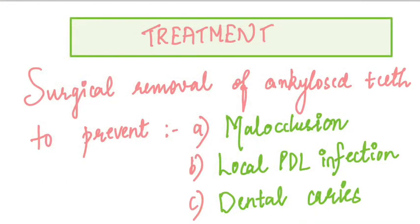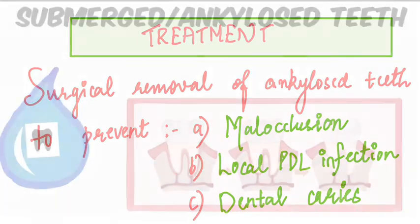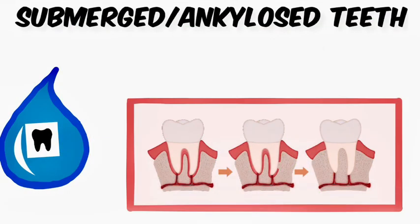Regarding treatment planning, these teeth require surgical removal or excision, as we need to prevent the development of malocclusion. For instance, a mandibular second molar lying well below the occlusal plane will not only prevent exfoliation of the deciduous tooth but will also delay eruption of its successor, the second premolar, potentially resulting in malocclusion of the permanent dentition. Additionally, local periodontal infection and dental caries are common in such teeth, making surgical removal crucial. That was all about ankylosed teeth — see you next time!